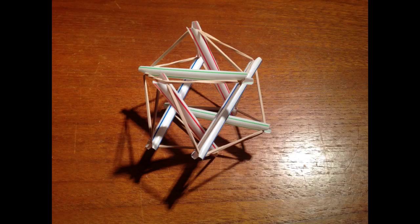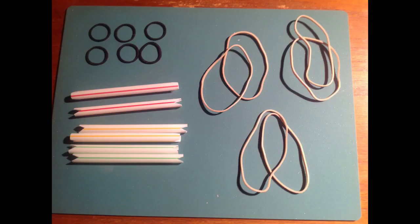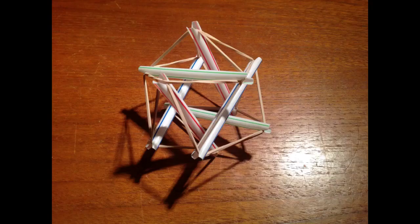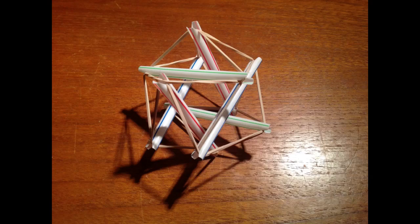This is the final product. It's a tensegrity model. It has six rigid elements—the straws—they don't touch each other. They float instead in the network of rubber bands under tension. In a separate slideshow, I describe how to assemble the kit.